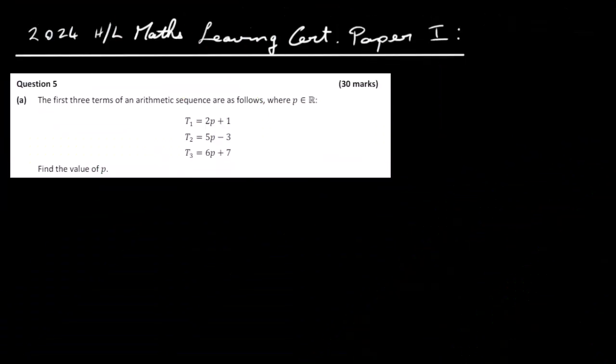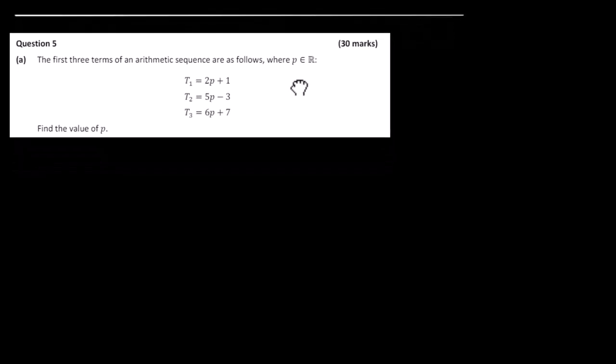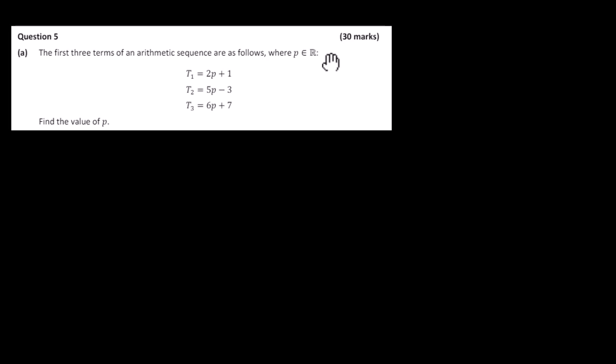In this video I'm going to have a look at the 2024 higher-level maths leaving cert paper 1, question 5. The first three terms of an arithmetic sequence are as follows: P is real, and we have T1 is 2P plus 1, T2 is 5P minus 3, and T3 is 6P plus 7. Find a value of P.